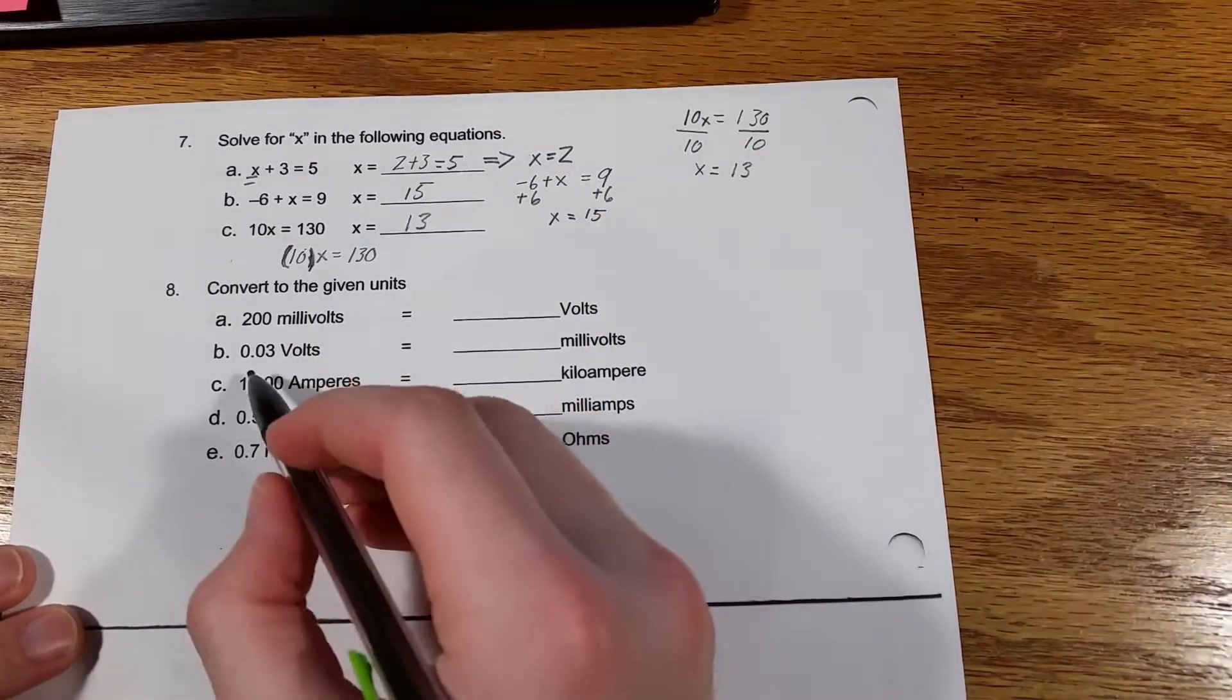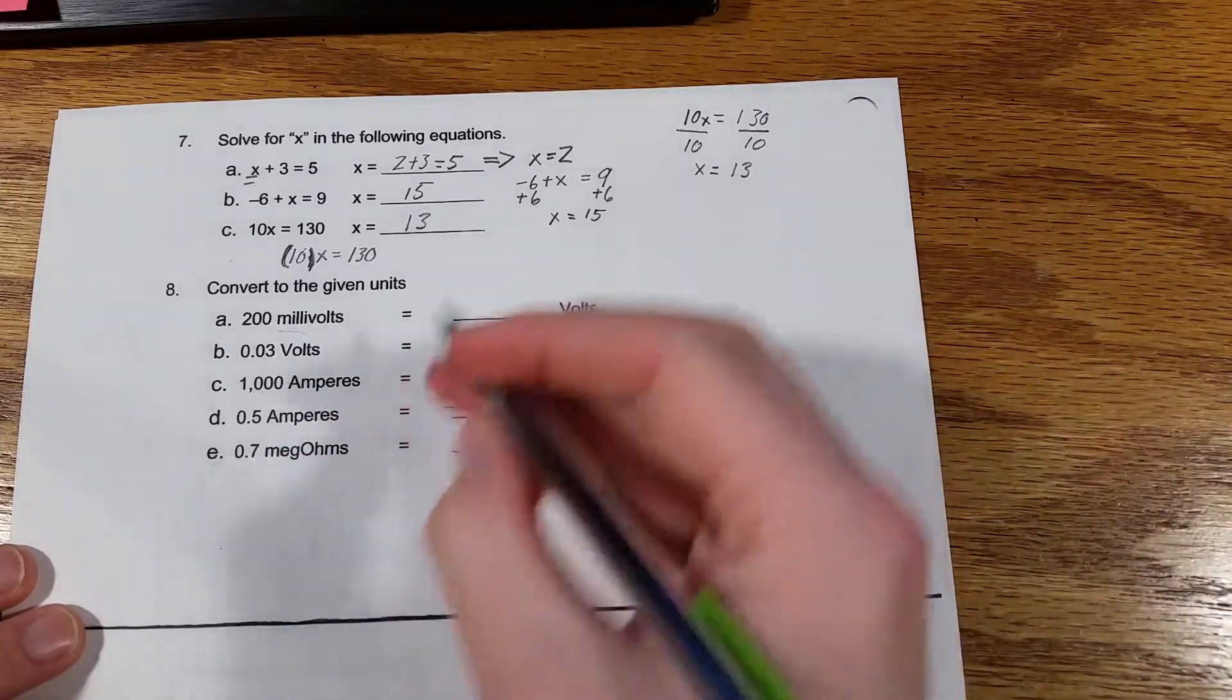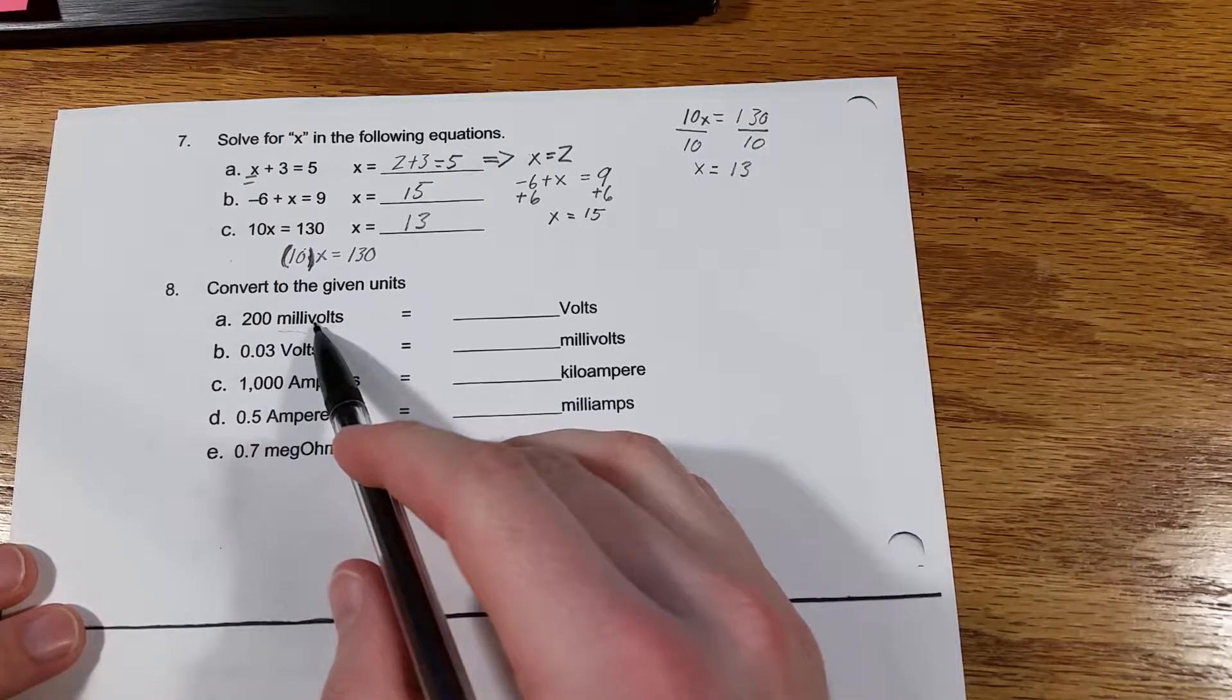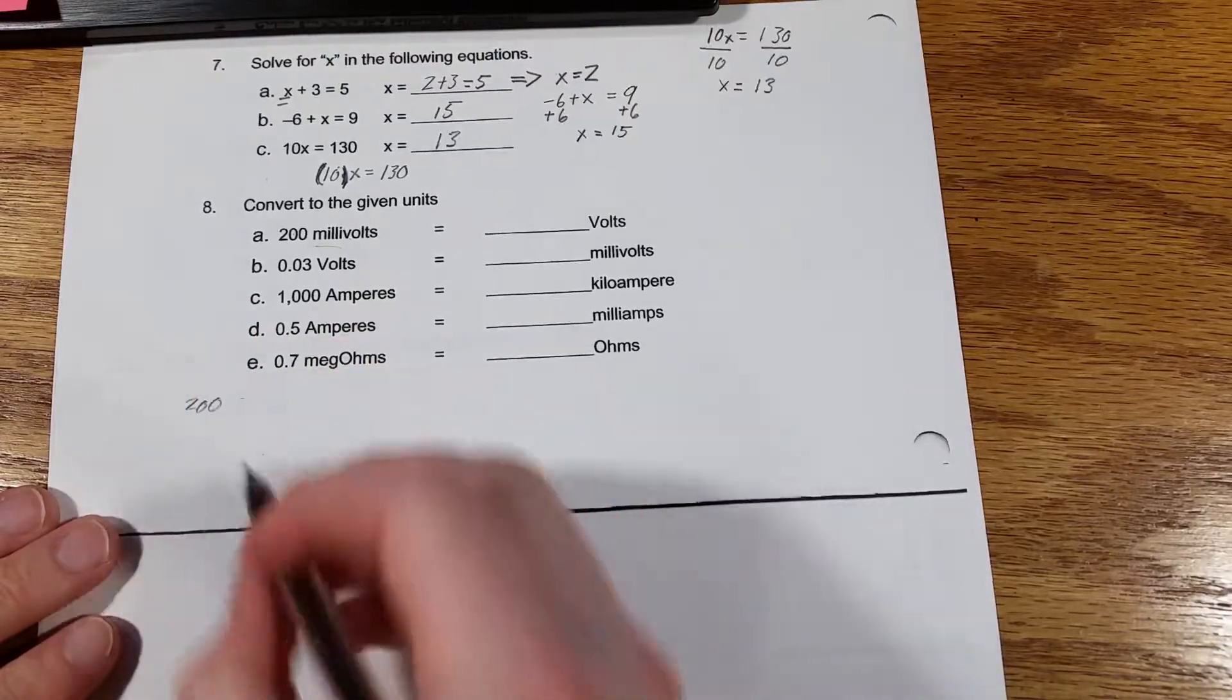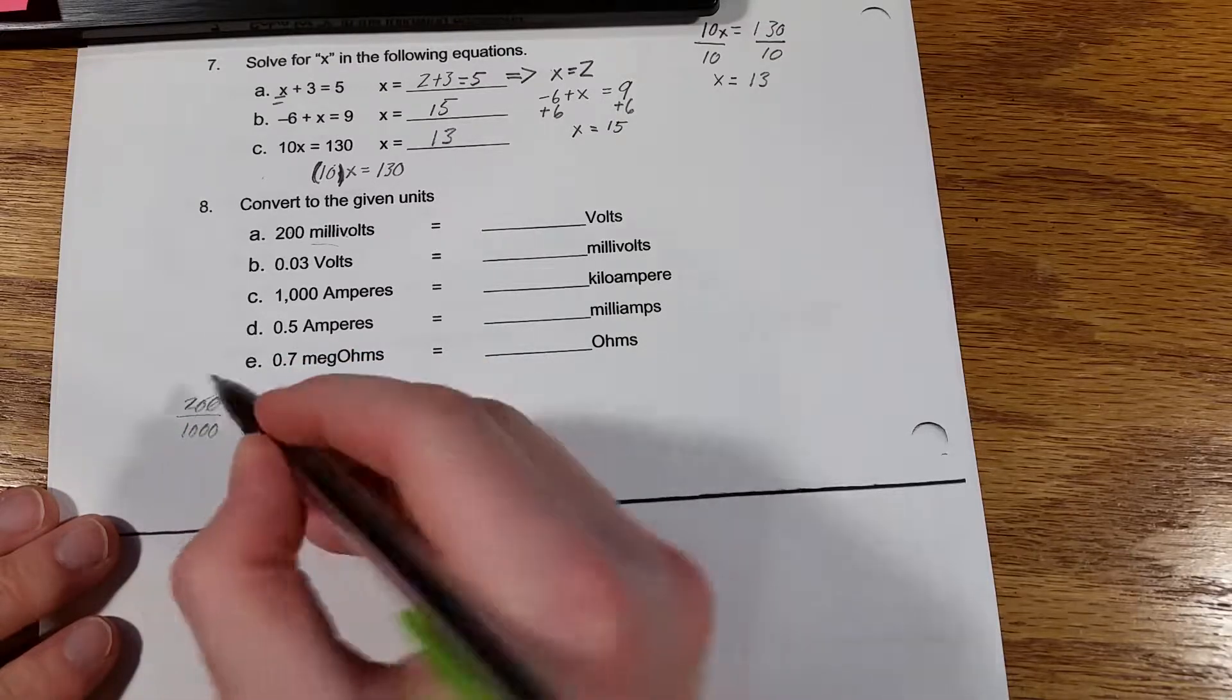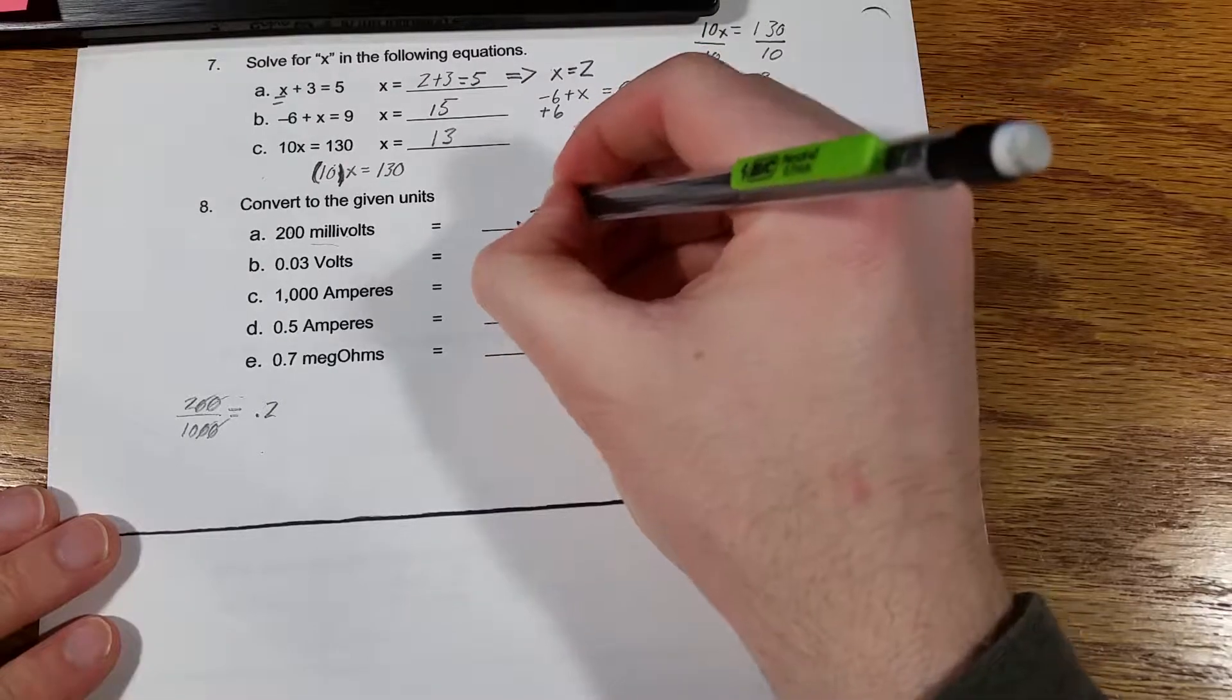Okay, 200 millivolts equals how many volts? So, milli means 1 over 1,000, or 1,000th. So if it's just asking us for it in the base unit of volts, we would divide this by 1,000 to get volts. So, 200 divided by 1,000 equals, cross some of these zeros out to make it a little easier, 2 divided by 10, so that would be 0.2 volts.